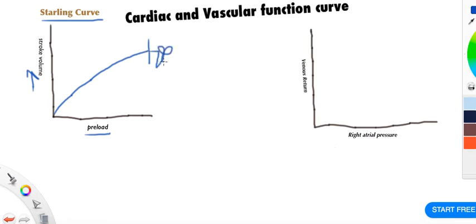The other curve we have is vascular function curve. To understand this, just illustrate here. Imagine this is our superior vena cava, this is our inferior vena cava, this is our right heart, right atria. So the blood goes from here to here.